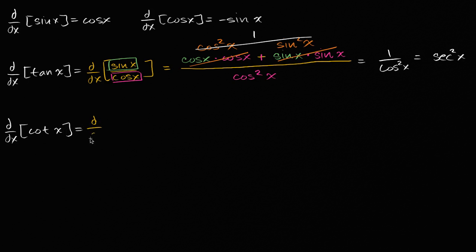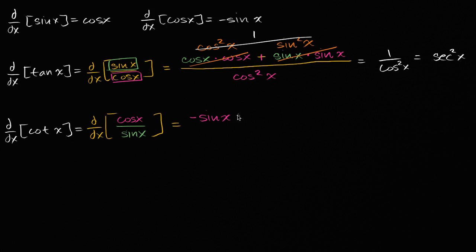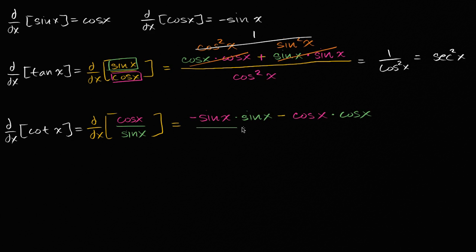Same idea. Cotangent of x is cosine of x over sine of x. We can use the quotient rule again. This gives us the derivative of the top function, negative sine of x, times the bottom function sine of x, minus the top function cosine of x times the derivative of the bottom function, which is just cosine of x, all over the bottom function squared, sine squared of x.